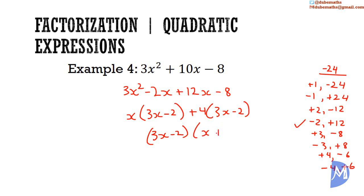So the factorized form is 3x minus 2 multiplied by x plus 4.